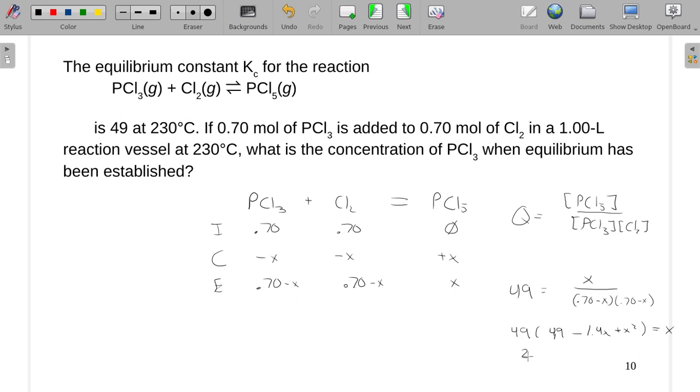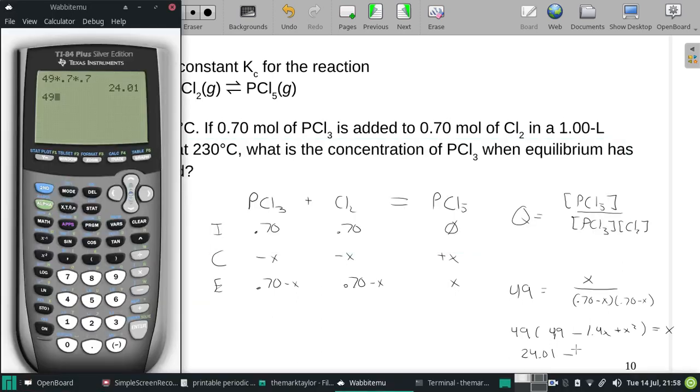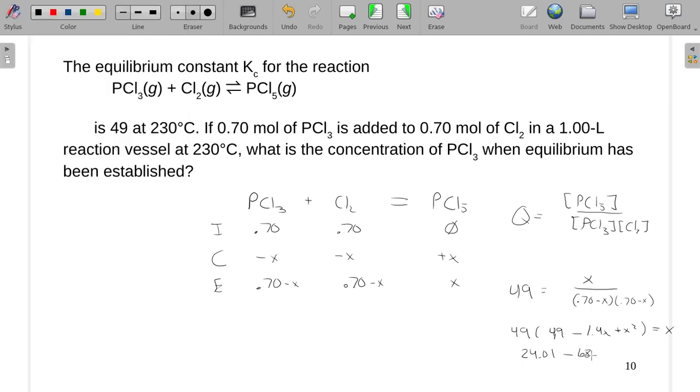So 49 times 0.49 is that 24.01. And then 49 times 1.4 is 68.6. And then this would just be 49X squared. And I need to move this X over.